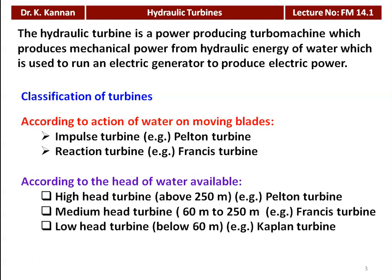According to the head of water available: a high head turbine has a head above 250 meters — for high head applications we use the Pelton turbine. A medium head turbine has a head of 60 to 250 meters — we use the Francis turbine. For a low head turbine, when the head is less than 60 meters, we use the Kaplan turbine.